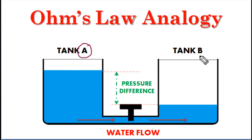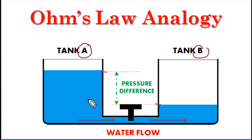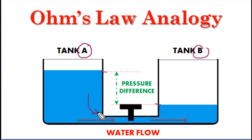Here we have two tanks, tank A and tank B. You can see that the water level in tank A is more compared to tank B. So, because of this level difference, there is a pressure difference between tank A and tank B. Because of this pressure difference, water will flow from tank A to tank B until the levels in both tanks are the same. This is what Ohm's law states — the water current flow is directly proportional to the pressure difference between the two tanks.